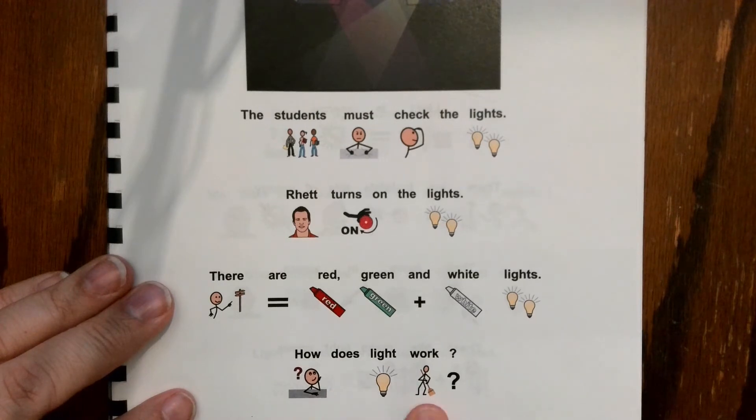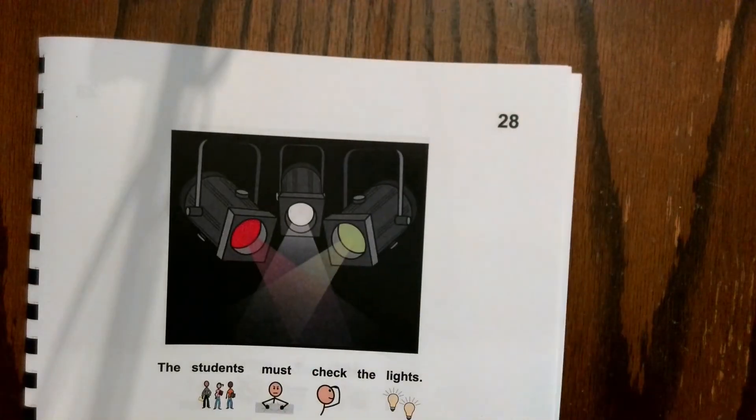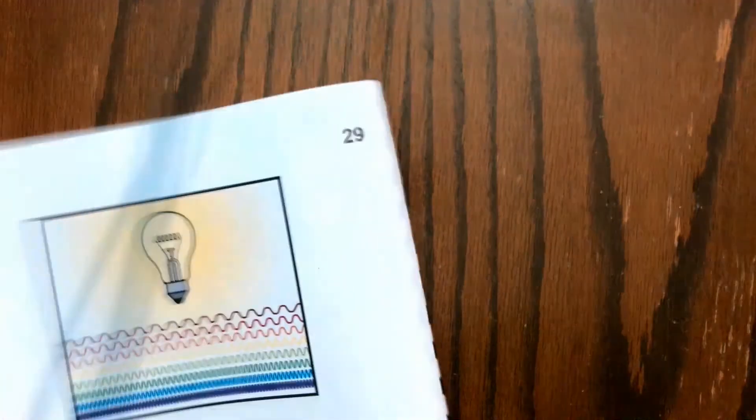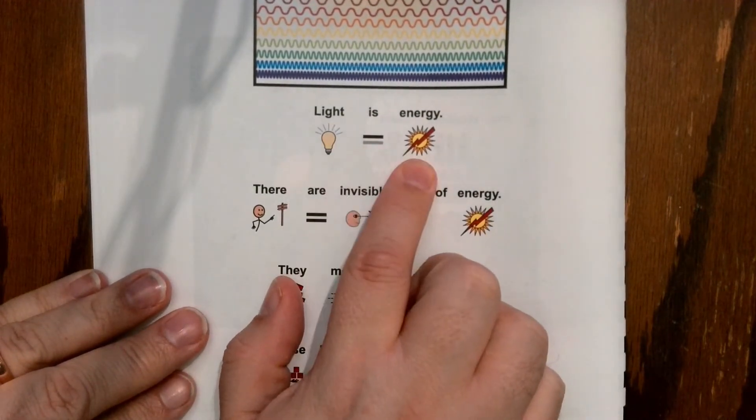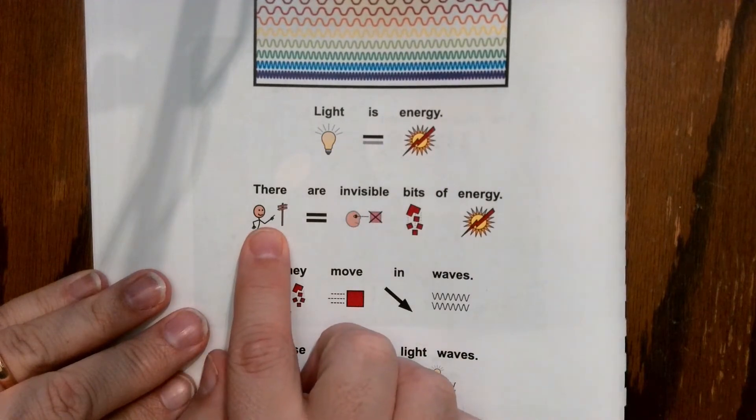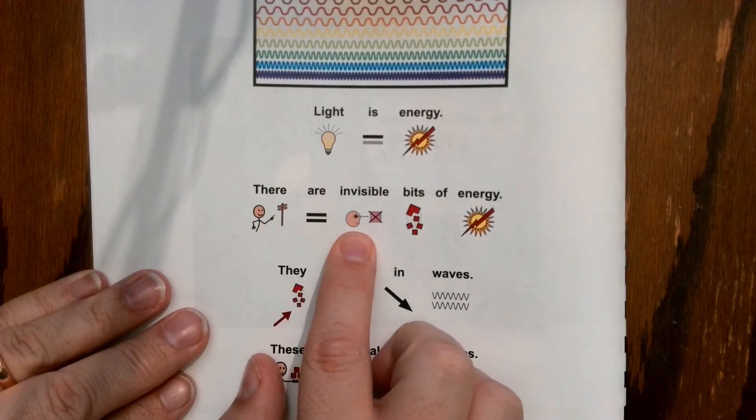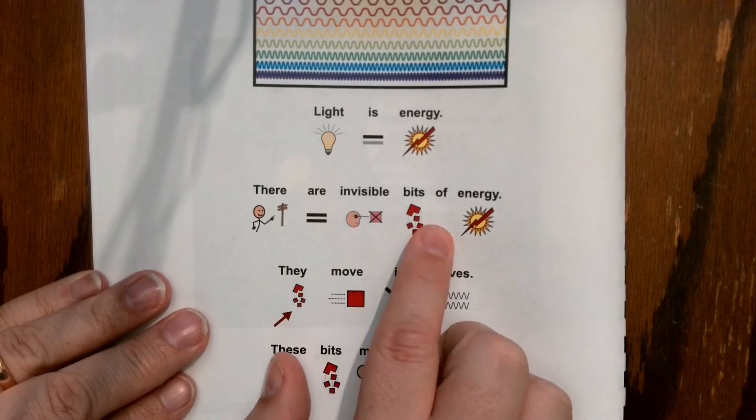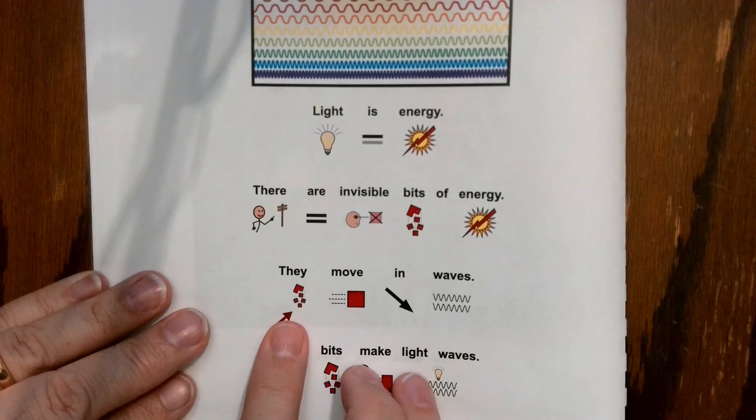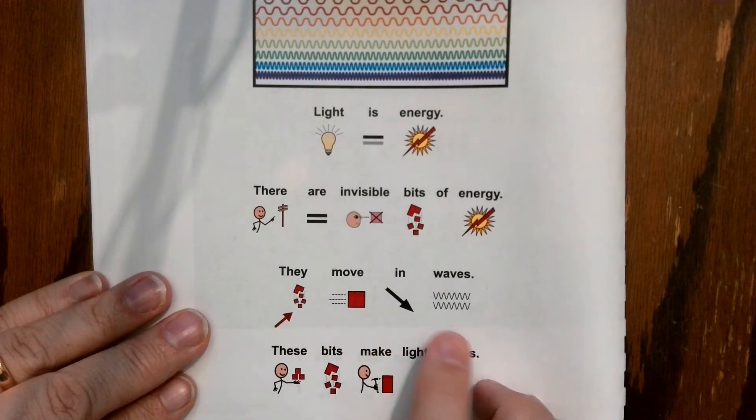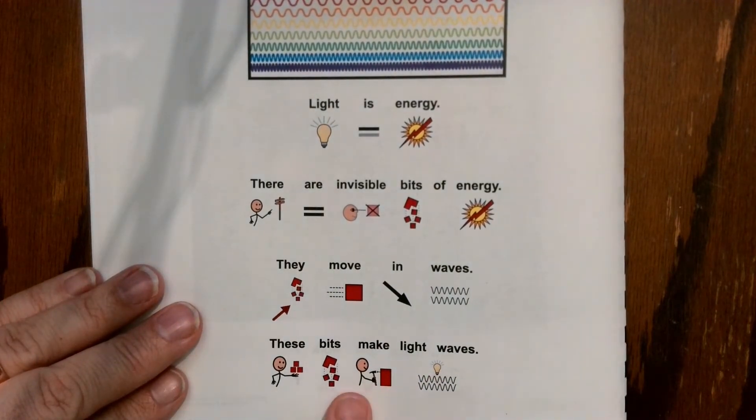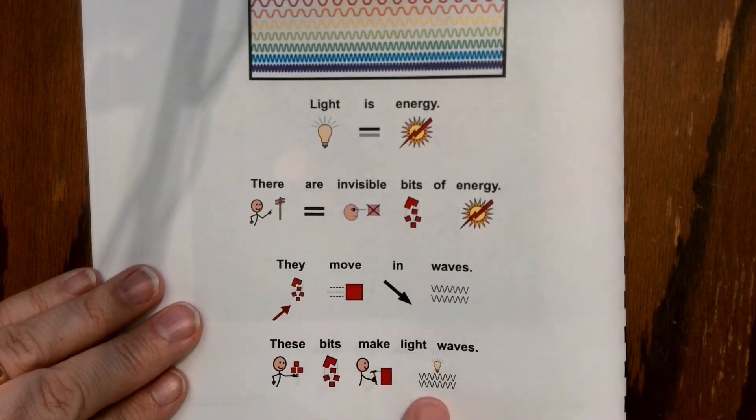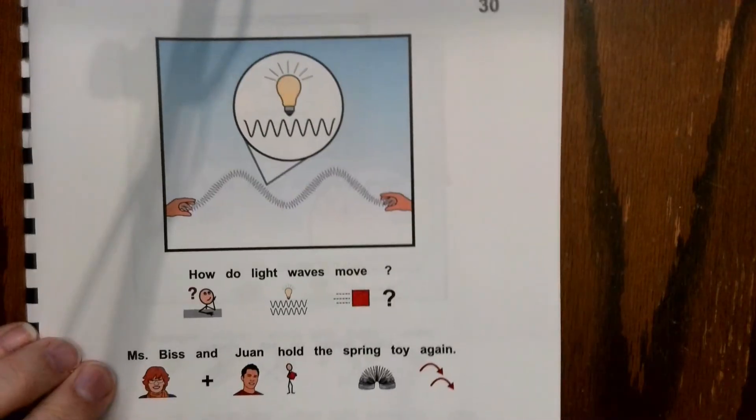Okay, light is energy. There are invisible bits of energy. They move in waves. These bits make light waves. On page 30.